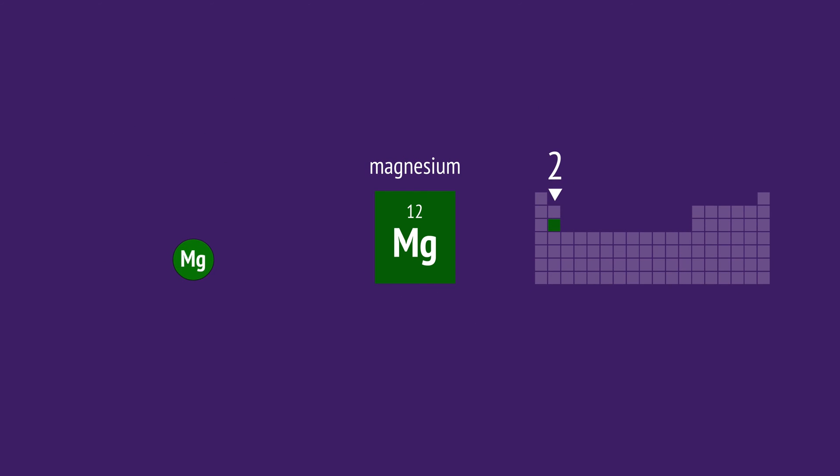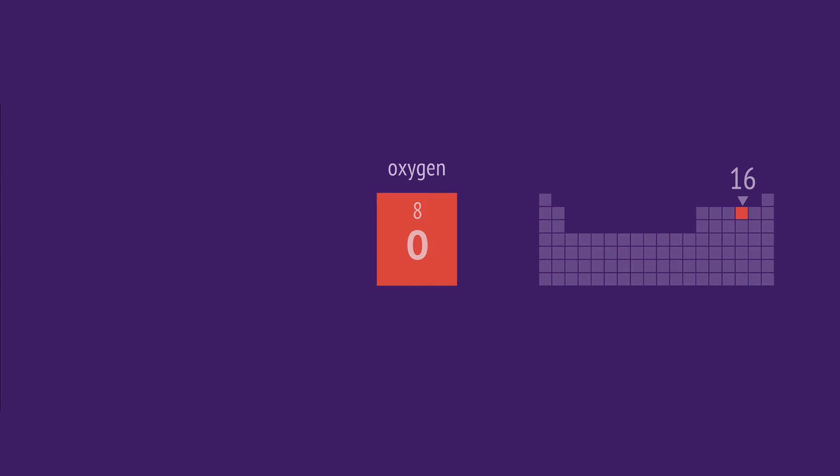Magnesium is in group 2, so has 2 valence electrons. Oxygen is in group 16, so it has 6 valence electrons.